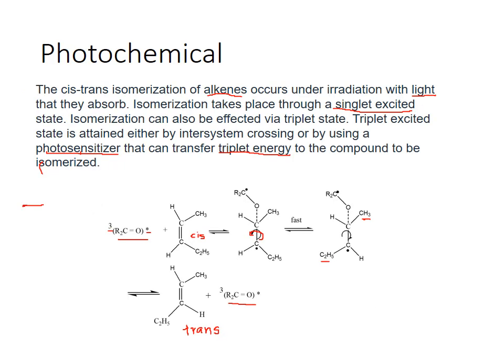Another method is the photochemical method, where you use light to convert one isomer to another. The alkenes are irradiated with light. When alkenes absorb the irradiated radiation, they undergo excitation to a singlet state, the double bond is broken, and there is conversion from one isomeric form to another.